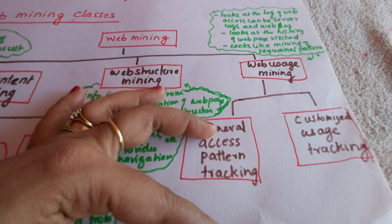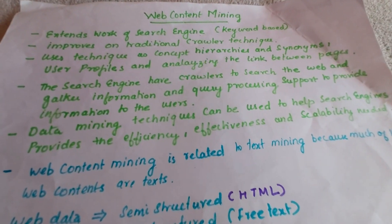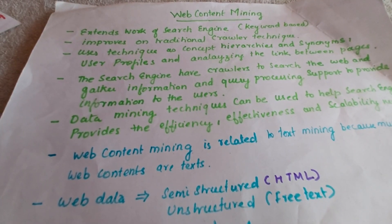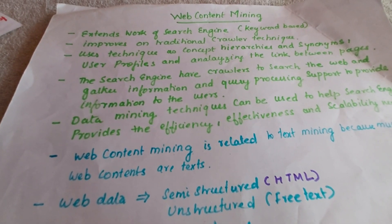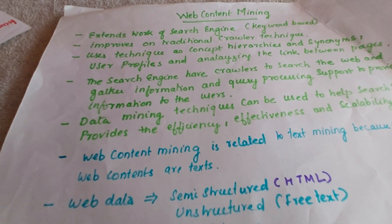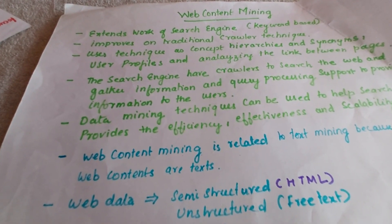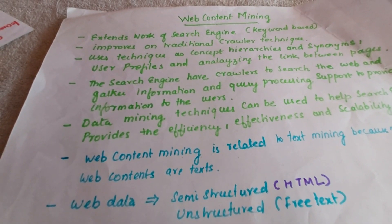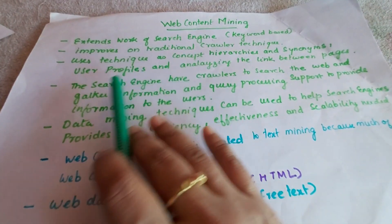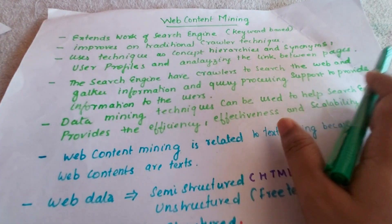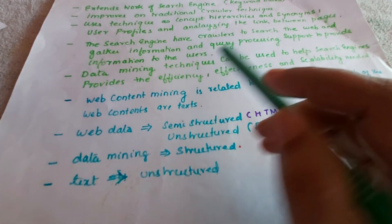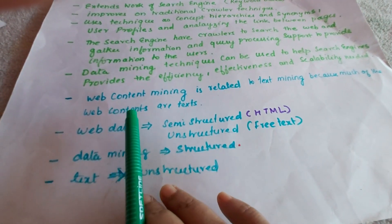Web content mining extends the work of search engines, which are keyword-based. The search engine has crawlers to search the web and gather information, and query processing support to provide information to the user. Web content mining improves on the traditional crawler technique by using concept hierarchy and synonyms, user profiles, and analyzing the links between pages. The search engine also uses data mining techniques which provide efficiency, effectiveness, and scalability.